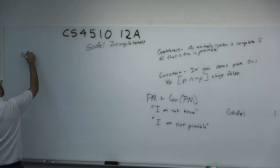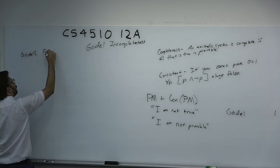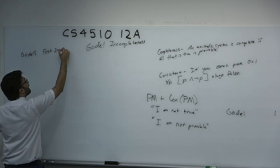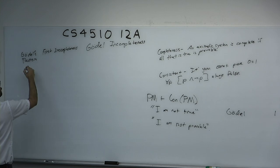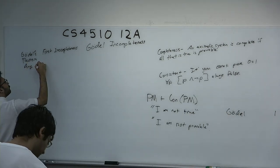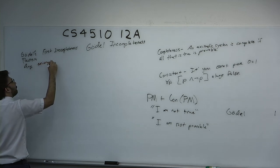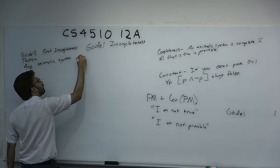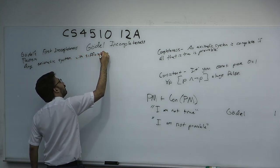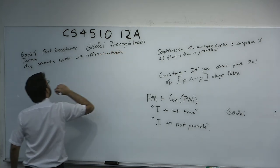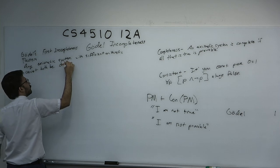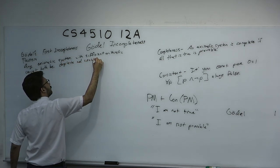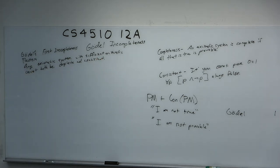The formal statement of Gödel's first incompleteness theorem: any axiomatic system with sufficient arithmetic cannot both be complete and consistent. The better way to word this: if a system is consistent, then it is incomplete. Any consistent axiomatic system will be incomplete.